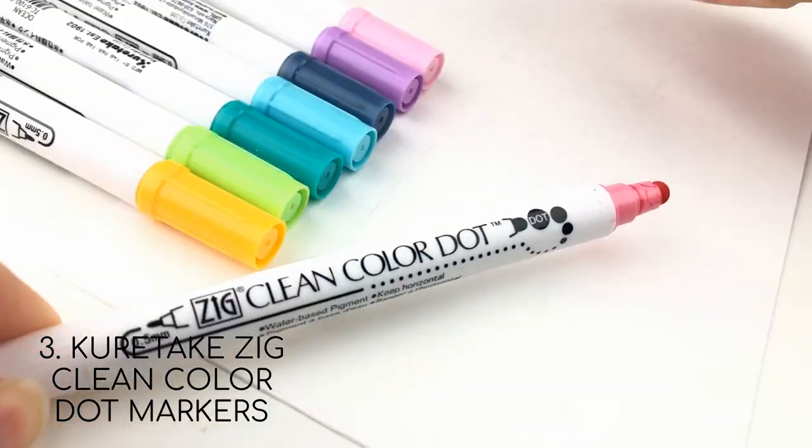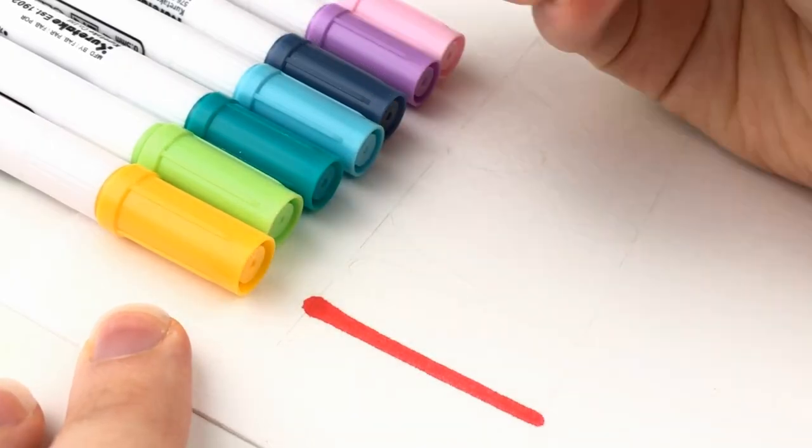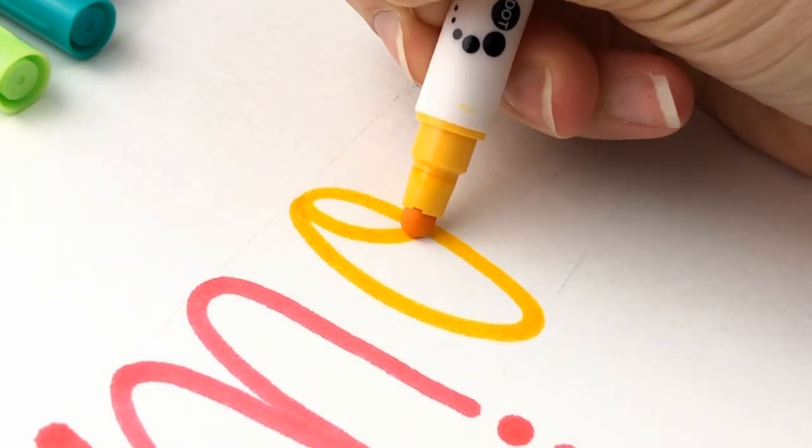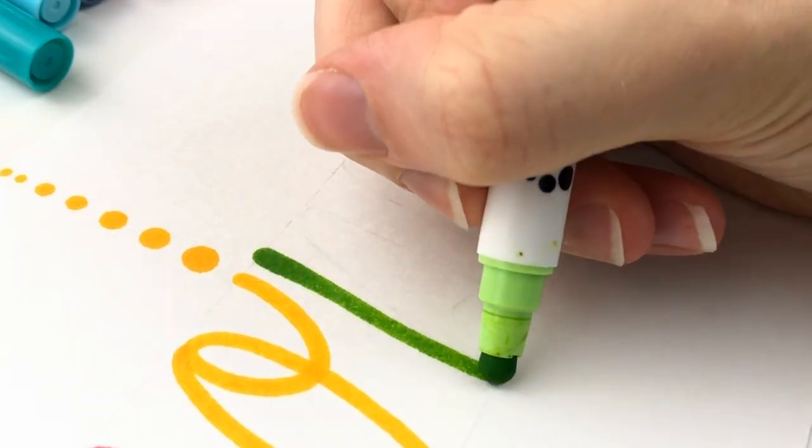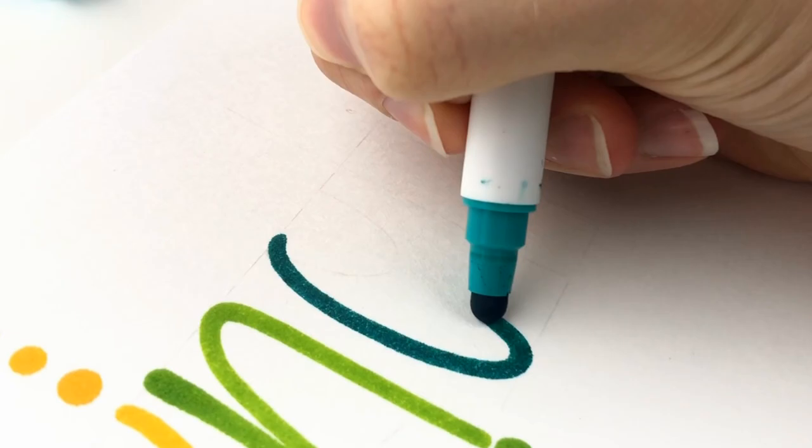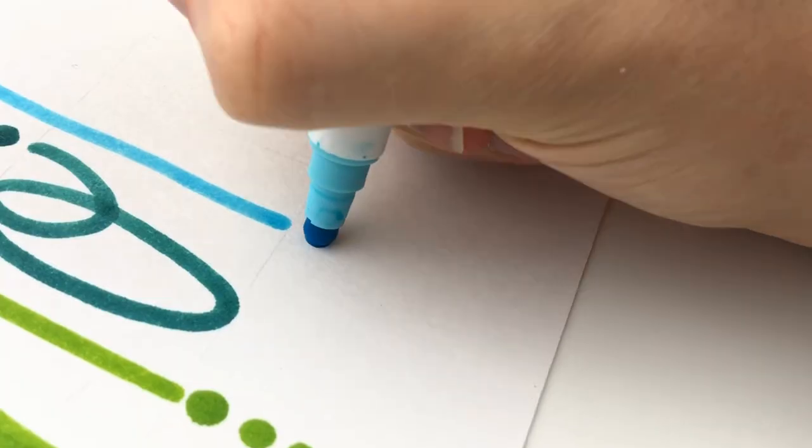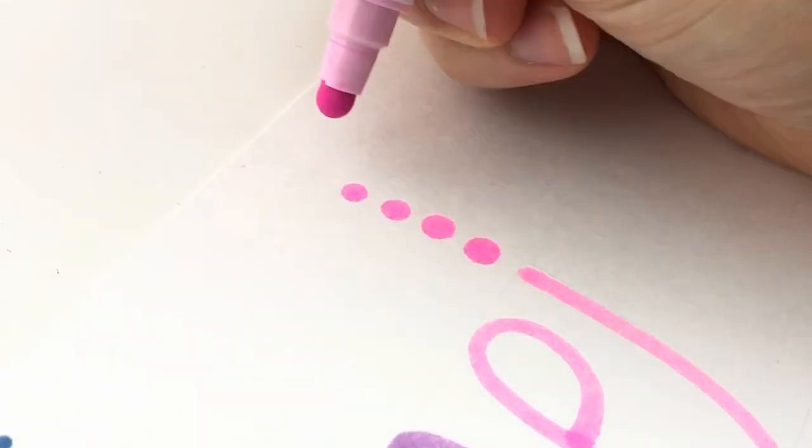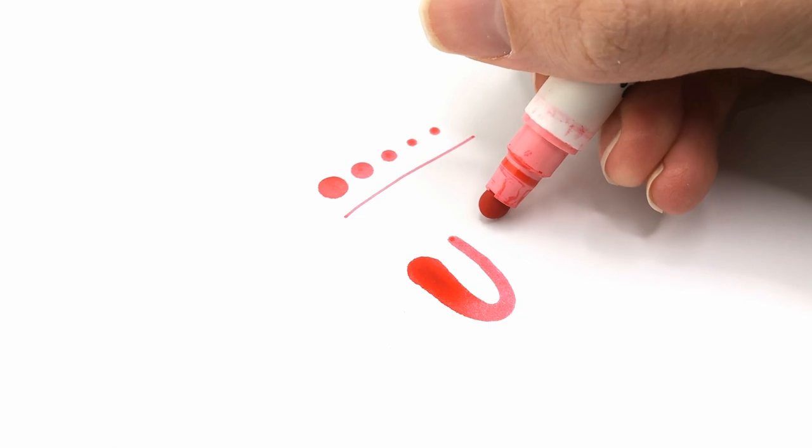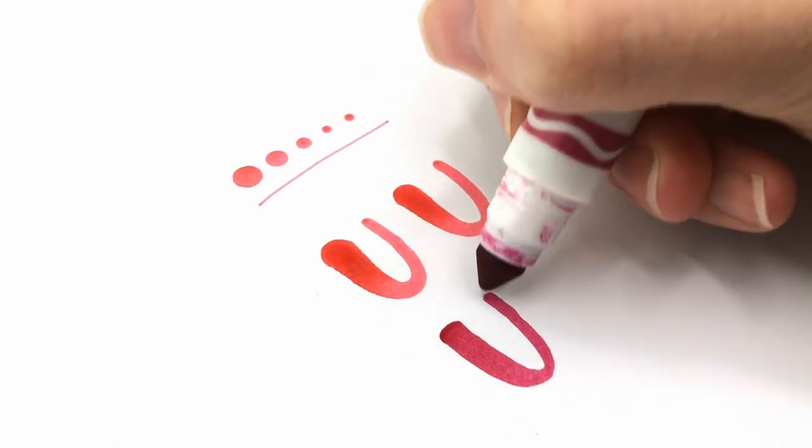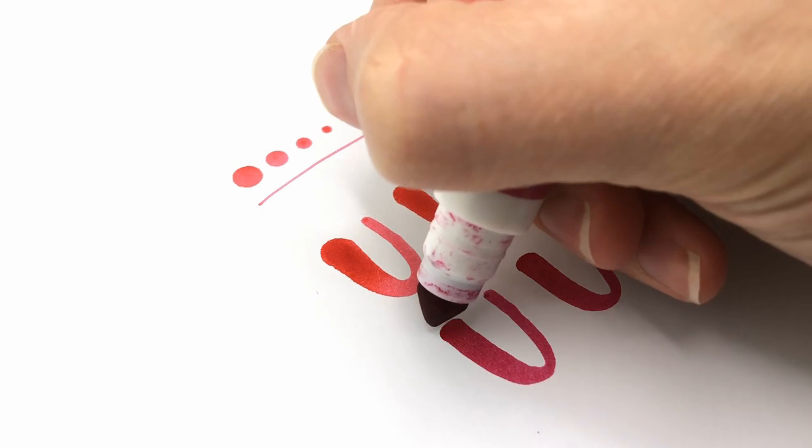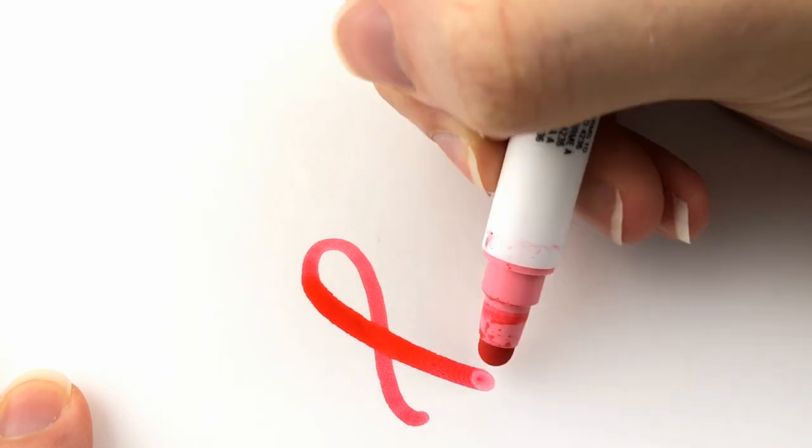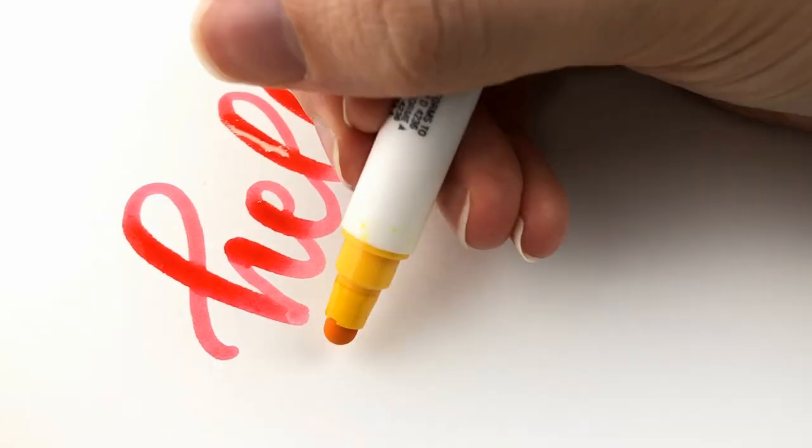And that brings me to the next pen, Kuretaki Zig clean colored dot markers. These ones look like a dot tip, definitely not a brush tip, but the whole point is that they're flexible to get different sizes of dots. They actually work really well for a rounded monoline look, but also because they're squishy, they can be used as a brush pen. It's a really cool look because all of the edges are really rounded instead of more straight like other pens. They can't give a very big contrast of thick to thin, but if you like the look of less contrast, they're great.